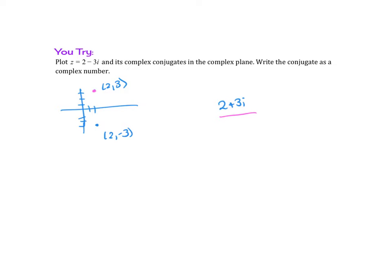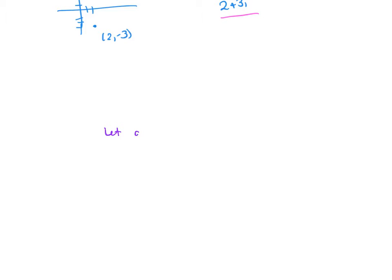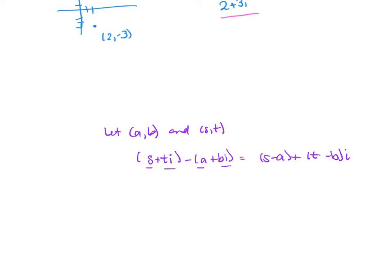Now we're going to let a, b, and s, t be points on a complex plane. The difference of corresponding complex numbers will be s plus ti minus a plus bi. We rewrite it so we have our horizontal component, s minus a, plus the vertical component, t minus b, times i. So the modulus of the difference is the absolute value of s minus a plus t minus bi, which is the square root of s minus a squared plus t minus b squared.